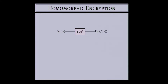The idea of homomorphic encryption has been around for several decades. The goal is to be able to encrypt some message M so that we can evaluate some function F on the message M without decrypting. This was fully realized in 2009 when Gentry presented the first fully homomorphic encryption scheme, allowing us to evaluate any function F on an encrypted message M.